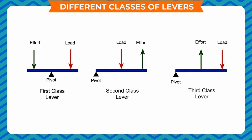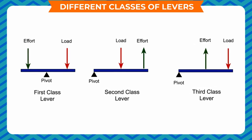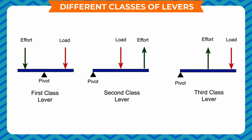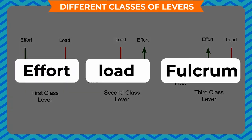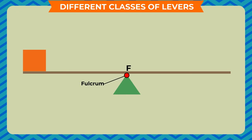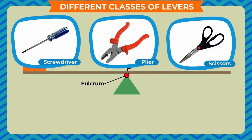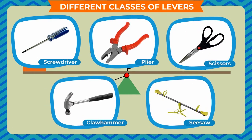Different classes of levers: There are three different classes of levers, named according to the position of the effort, load, and fulcrum. First class levers (L-F-E): In first class levers, the fulcrum F is located at some point between the load L and effort E. Examples of first class levers are screwdrivers, plier, scissors, claw hammer, see-saw, etc.